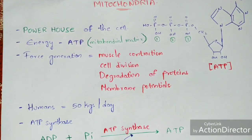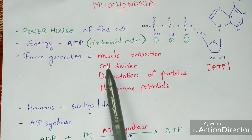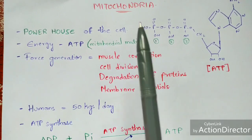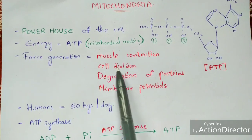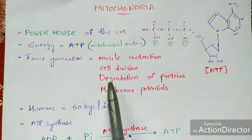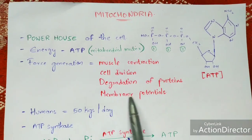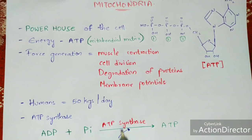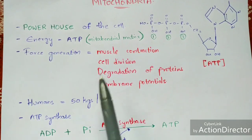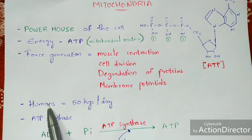Cell division — that is mitosis and meiosis — occurs in the cell, and that process is explained in my previous videos. The degradation of proteins and the balancing of membrane potential also take place as major functions of this mitochondria.